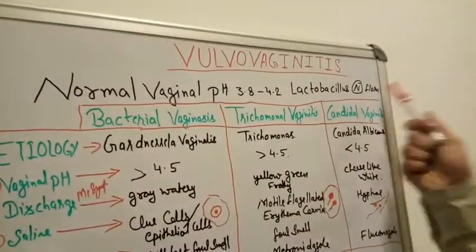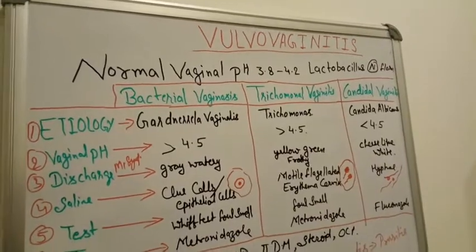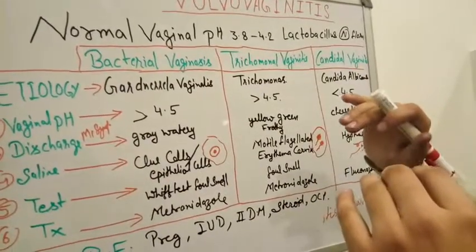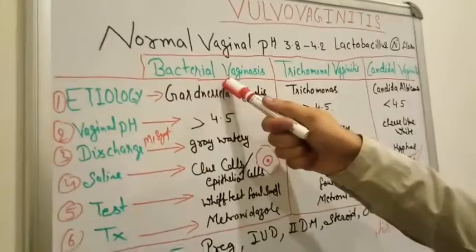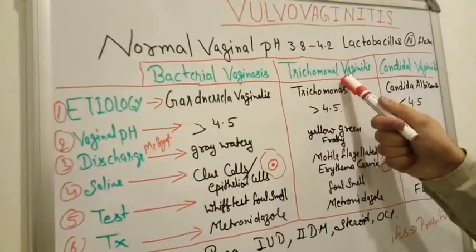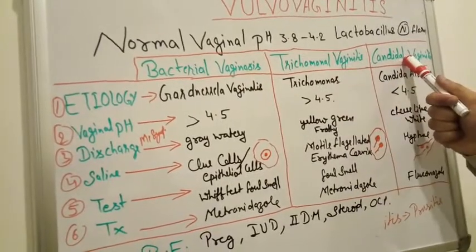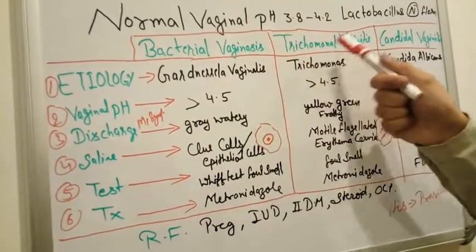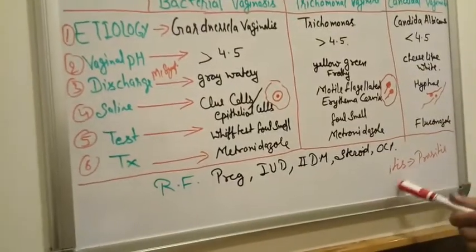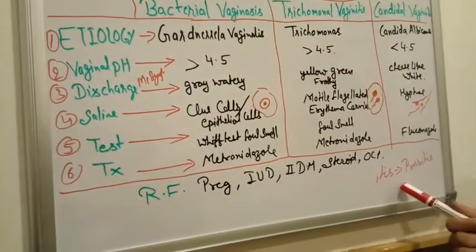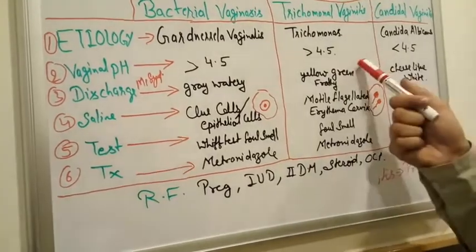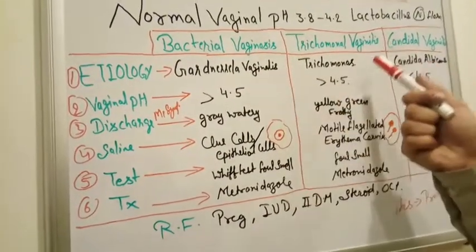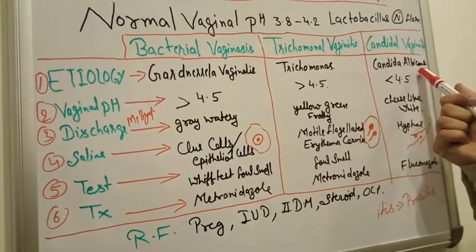Vulvovaginitis has mainly three types: bacterial vaginosis, trichomonal vaginitis, and candidal vaginitis. The suffix '-itis' means infection, and infection causes itching. In bacterial vaginosis there is no pruritis, but in trichomonal vaginitis there is pruritis, and in candidal vaginitis there is also pruritis.